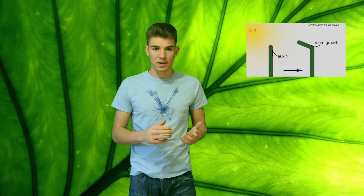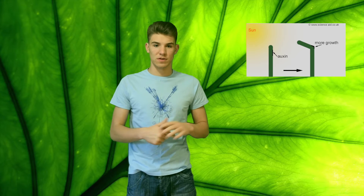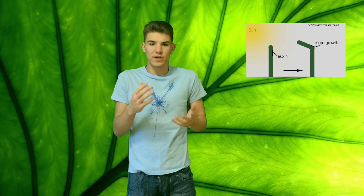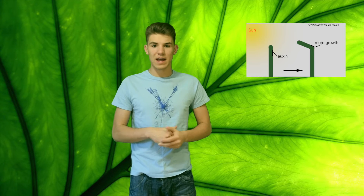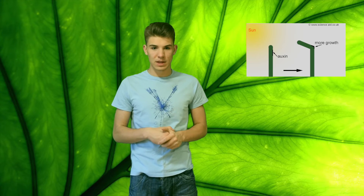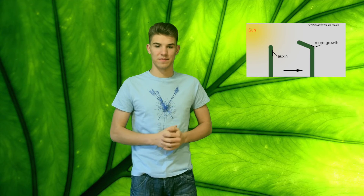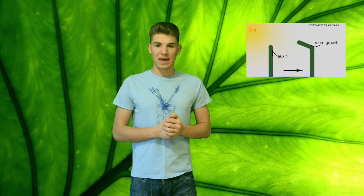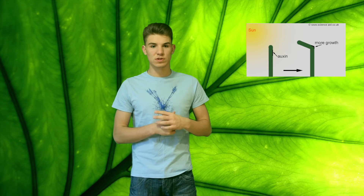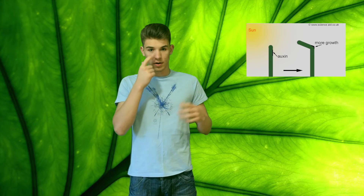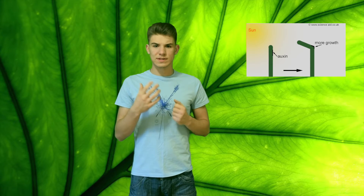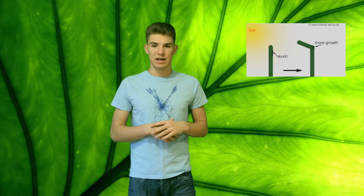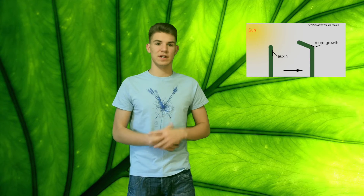Auxin is transported only in one direction, from the top to the bottom, meaning there is more auxin at the top and very little close to the bottom. This controls the shape of the plant. Auxin will go to the shaded part of the stem and cause those cells to grow longer, while the ones closer to the sun will remain the same size. This will cause it to bend towards the sun.